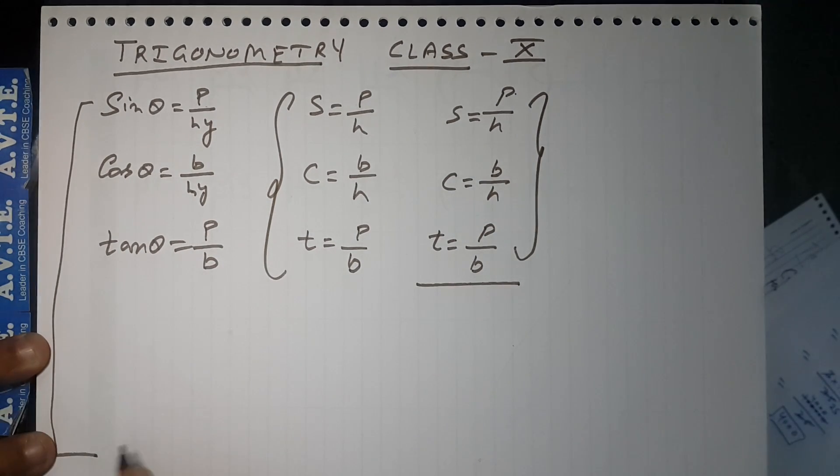Now check: Who is the reciprocal of sin θ? That is cosec, which is hypotenuse upon perpendicular.